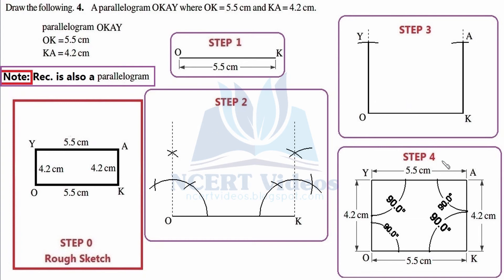In the final step, step number four, connect the newly found vertices Y and A with a ruler. If all previous steps are correct, this segment must measure 5.5 centimeters. Tidy up the construction by erasing the arcs and labeling all internal angles as 90 degrees, and marking the side measurements as 4.2 cm and 5.5 cm, along with the vertices O, K, A, Y — simply copying the rough sketch onto the final image. Pause and try to construct it yourself.